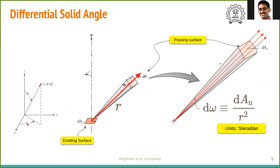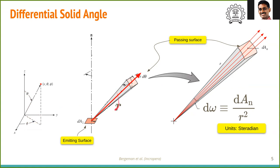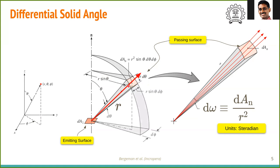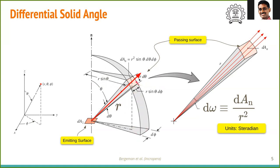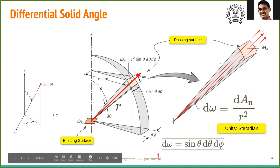To derive the solid angle, we use the spherical coordinate system. Here φ is the azimuthal angle and θ is the polar angle. For a distance r, the arc length r sinθ defines the horizontal extent. The area element is determined as follows: this length is r dθ along one direction, and this length is r sinθ dφ along the other. So the area is r² sinθ dθ dφ. Substituting into the solid angle definition, we get dω = sinθ dθ dφ. This expression recurs throughout the derivations in radiation fluxes.